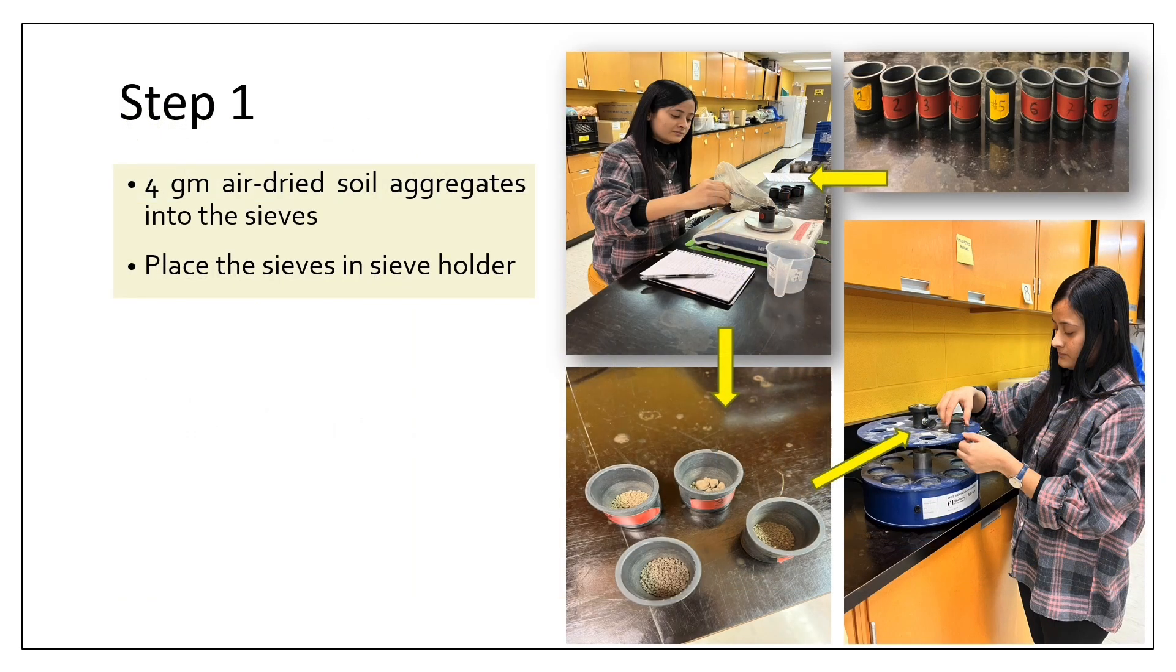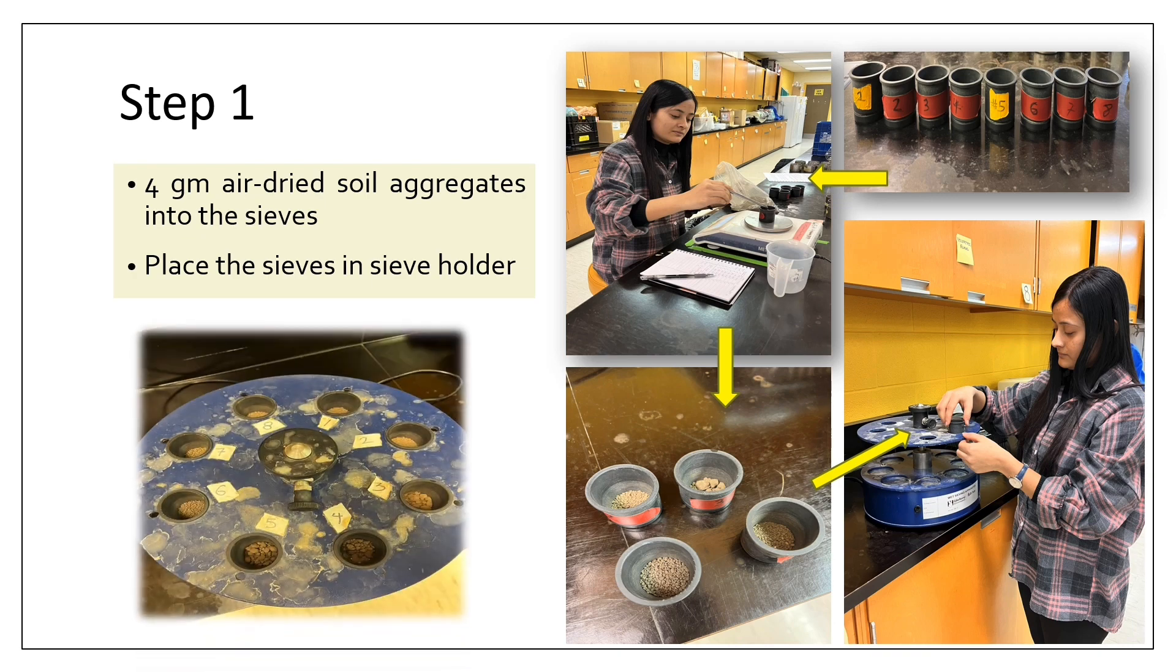Step 1: In this step, air sieves are filled with 4 grams of air-dried soil aggregates. We can see the air sieves in the right top corner of the slide, and then we have to place the sieves in the sieve holder as shown in the picture. All these are numbered so that we do not get confused.